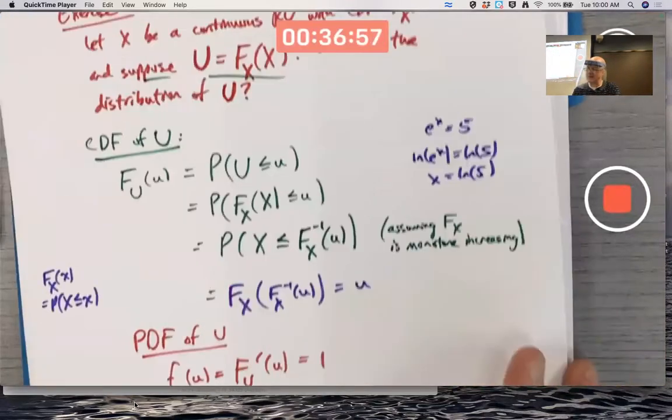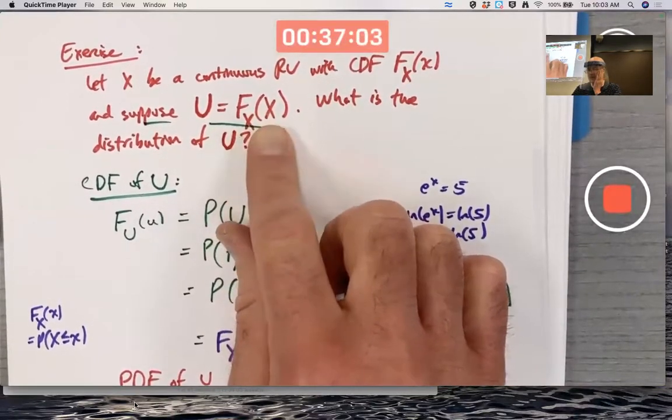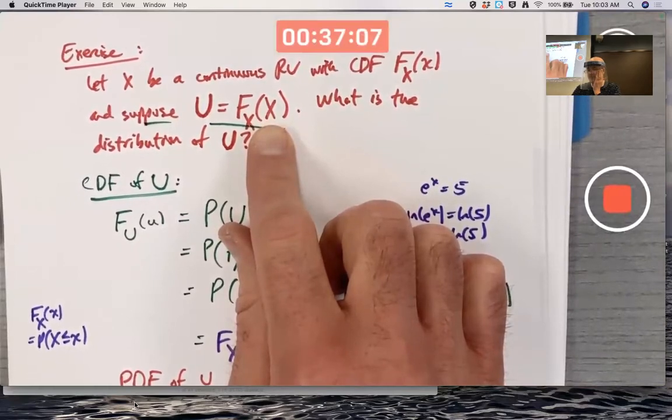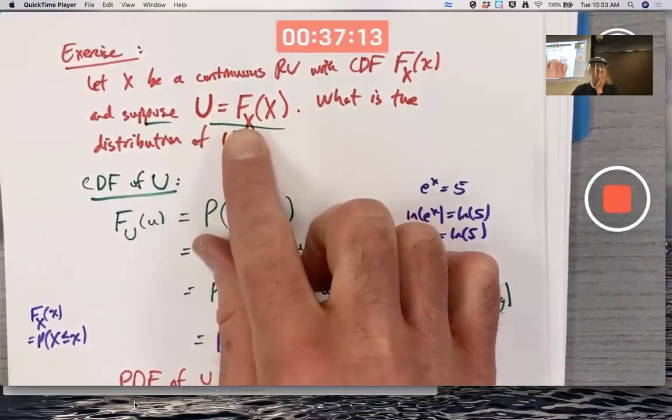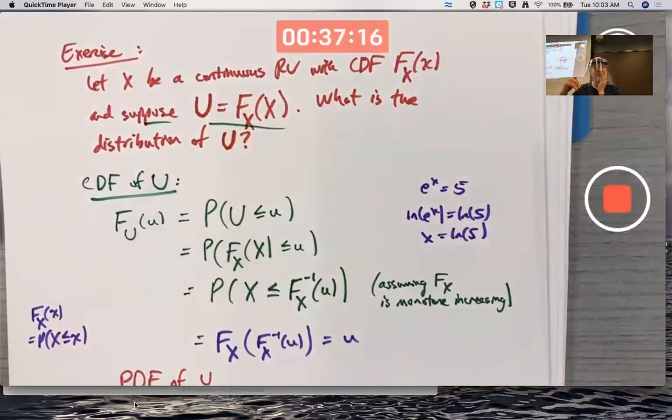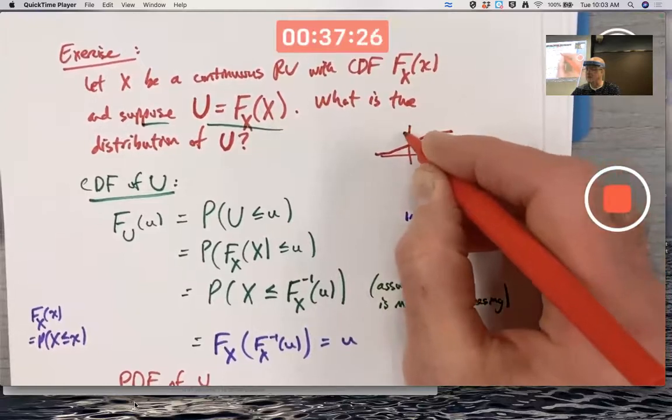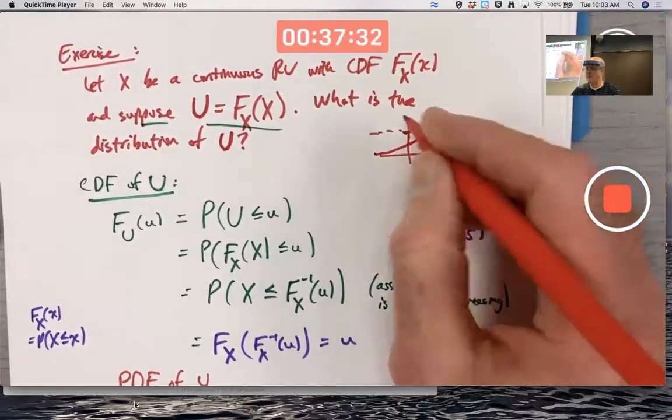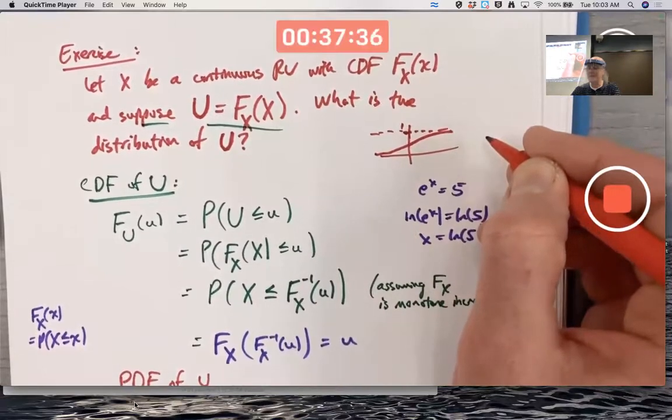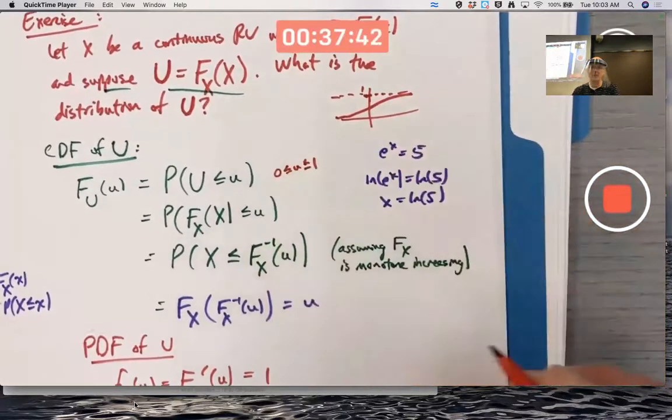In fact, it would have to be a one unit interval of values, like zero to one maybe. Since capital U is the CDF of capital X evaluated at capital X, capital X can take on any real value, but U can only take on values between zero and one. CDFs outputs have to be between zero and one.